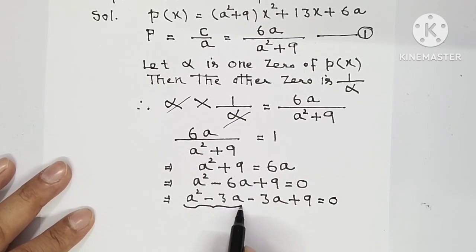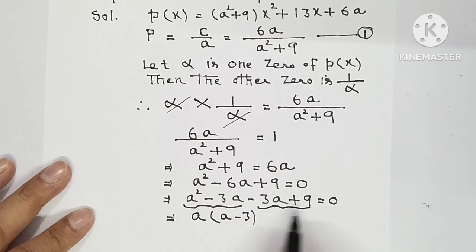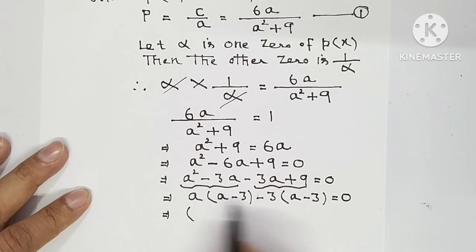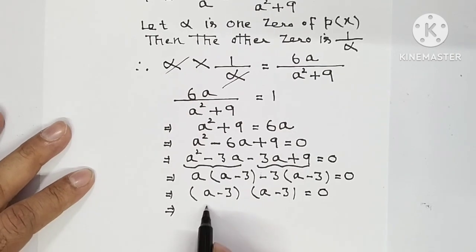अब यहां से आप क्या common ले लोगे a. ब्रेकेट में क्या बचेगा a² divided by a is a minus 3. और इन 2 में minus 3 common. So here will be a plus minus is minus 9 divided by 3 is 3 that is equal to 0. So in one bracket a minus 3, in other bracket is also a minus 3 equal to 0. अब इसको a minus 3 into a minus 3 को a minus 3 ka whole square equal to 0 भी लिख सकते हूं.